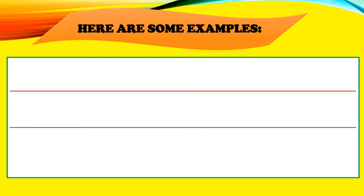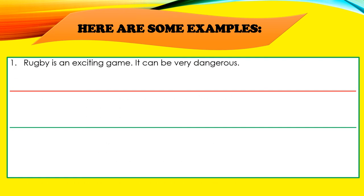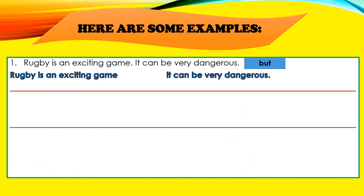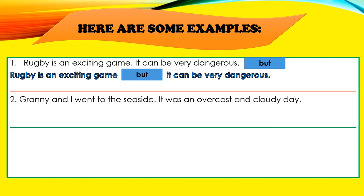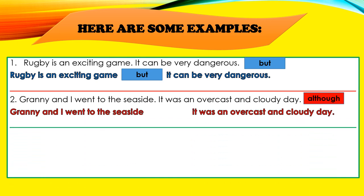Now let's look at some more examples. Number one: "Rugby is an exciting game. It can be very dangerous." We've chosen the conjunction BUT: "Rugby is an exciting game but it can be very dangerous." Example number two: "Granny and I went to the seaside. It was an overcast and cloudy day." We've chosen the conjunction ALTHOUGH: "Granny and I went to the seaside although it was an overcast and cloudy day."